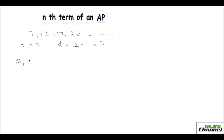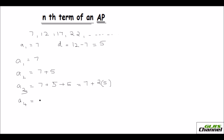So my first term A1 is 7. How did I get the second term A2? I just added my common difference to this, so I get the second term 12. Now for the third term, I add 5 again — I already added a 5, and now I'm going to add one more 5. So when I add 2 fives to the first term, that is 7 plus 2 times 5, which gives our third term.